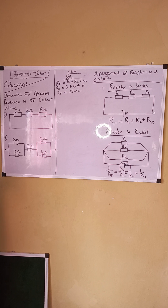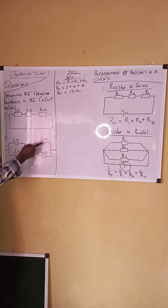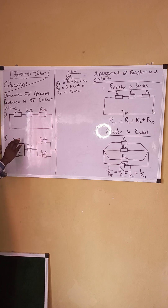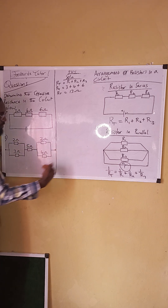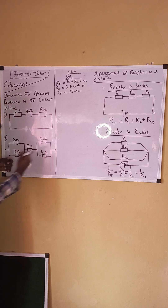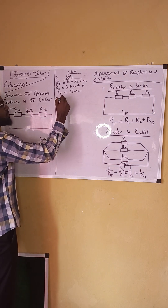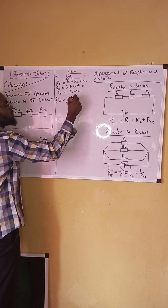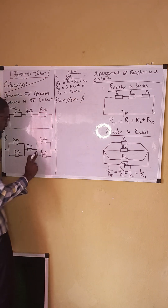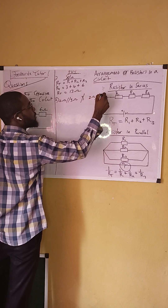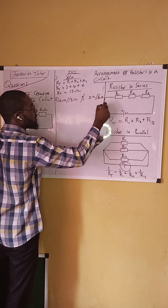Now the second circuit is a mixed arrangement. We have a parallel connection on one side and another parallel connection on the other side, with a series element in the middle. For this circuit, we have 2 ohms in parallel with 3 ohms on one side, and 2 ohms in parallel with 4 ohms on the other side.